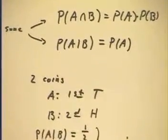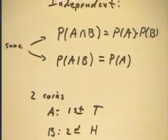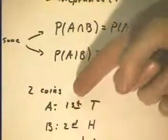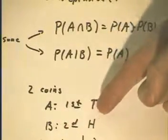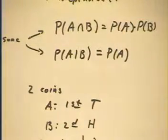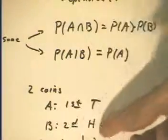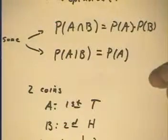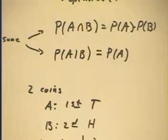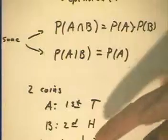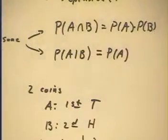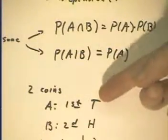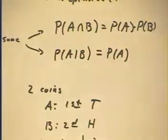Now let's look at a couple of examples. Two coins — there are two events. One event is the first coin gives you tails, and another event is the second coin gives you heads. Are these dependent or independent? Does what you get on the second coin depend on what you get on the first coin? No — not if you flip the coins separately. So we generally say that what happens in the first flip is totally independent of what happens in the second flip.